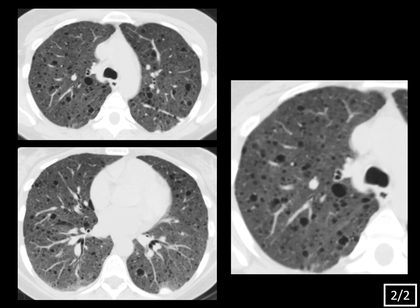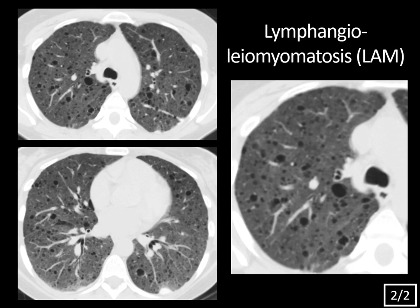In a female patient with tuberous sclerosis, this is typical for lymphangioleiomyomatosis, which for obvious reasons we tend to just call LAM. This is a rare multi-system disorder that can occur sporadically but often occurs in association with the tuberous sclerosis complex. If patients are symptomatic, they usually have exertional dyspnea. Two key complications of LAM are recurrent pneumothorax and chylothorax — a chylous effusion — and you might even see a dilated thoracic duct. The key is that the cysts are uniform and diffusely scattered throughout the lung.